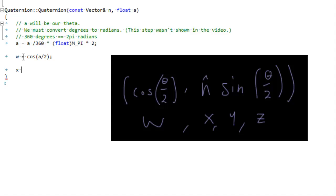Now x, y, and z I'm going to split up into different parts. So we're going to get n dot x times sine a over 2. And copy, paste, paste. y, z, y, z. Pretty simple. Pretty simple way to develop quaternions.